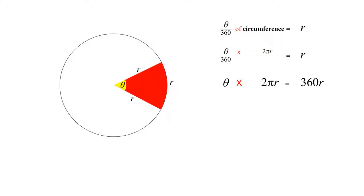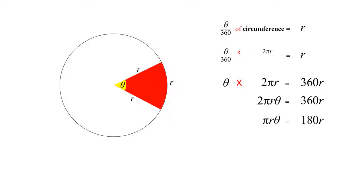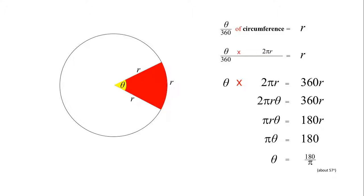Multiplying both sides by 360 gets rid of the fraction, and we get theta times 2πr equals 360r. Tidying up the left-hand side, we can write that as 2πrθ equals 360r. On both sides we've got something we can simplify — we can divide both sides by 2 to get πrθ equals 180r. That's got r on both sides, so we can divide by r to get πθ equals 180.